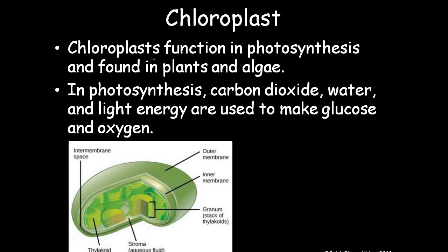Chloroplast functions in photosynthesis and is found in plant and algae cells — not in animal cells. In photosynthesis, carbon dioxide, water, and light energy are used to make glucose and oxygen. The chloroplast has chlorophyll and captures light energy to create food for the plant. It has an outer membrane, inner membrane, and structures called thylakoids. A complete stack of thylakoids is called a granum, and the aqueous fluid surrounding them is called the stroma.